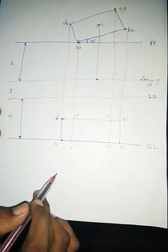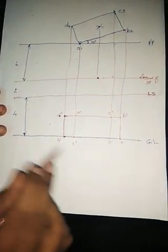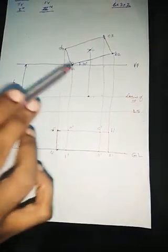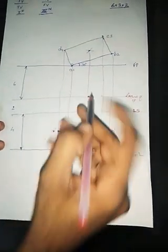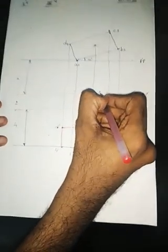Here this is where we will be getting the exact position of the station point — in another manner, the observer is standing here. So this is our station point.